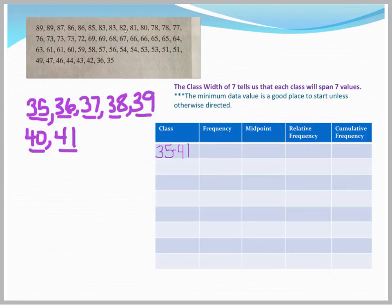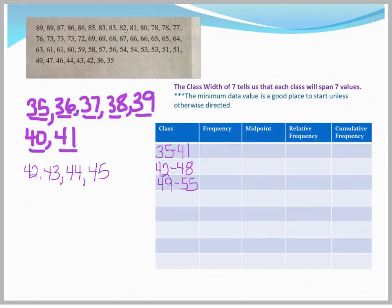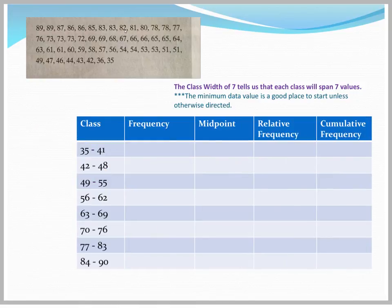Now we can't have any gaps in our classes, so our next class has to start immediately and go from 42, and it has to span 7 numbers. So it's going to go from 42 to 48. The next class would start again immediately at the next number at 49, and go to 55. And you would continue on that way, filling all 8 classes. And you would have 35 to 41, 42 to 48, 49 to 55, and 56 to 62, and so on until you got up to 84 to 90.